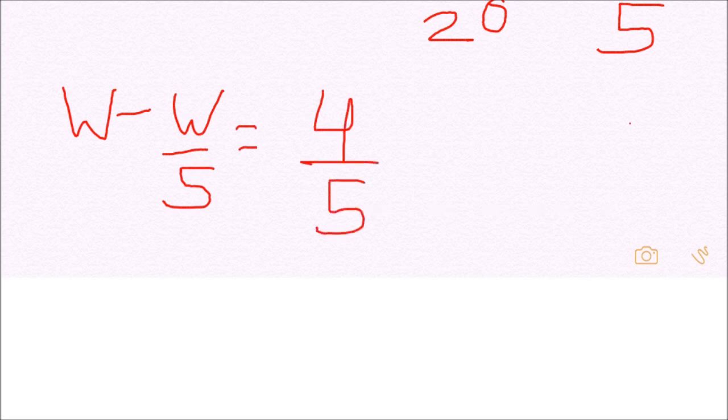As calculated, the work or the distance covered is W by 5. So the remaining work is W minus W by 5 that is 4 by 5 times W. This is the distance to be covered by Ajay and Vijay together in how many days.